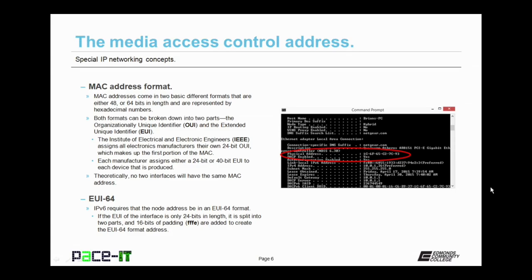Each manufacturer then assigns its own EUI to each device that is produced — usually it is the serial number of that device. Theoretically, no two interfaces will have the same MAC address. IPv6 requires that the node address, or the MAC address, be in an EUI-64 format, so that MAC address has to be 64 bits in length. If the EUI of the interface is only 24 bits in length, it is split into two parts and 16 bits of padding are added to create the EUI-64 format.